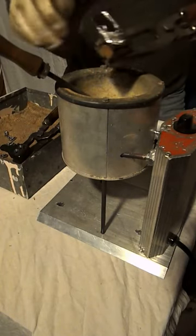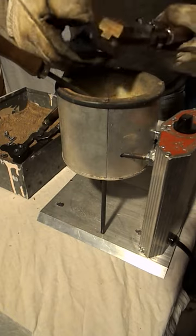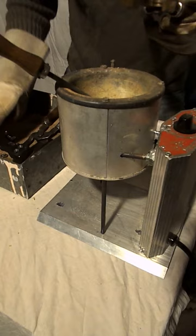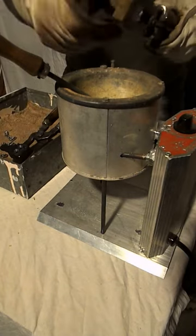There we are, our sprue. Alloy has gone hard, turn it around, pop the excess metal off, out comes our bullet. So that's straightforward. We'll do one more for good measure.